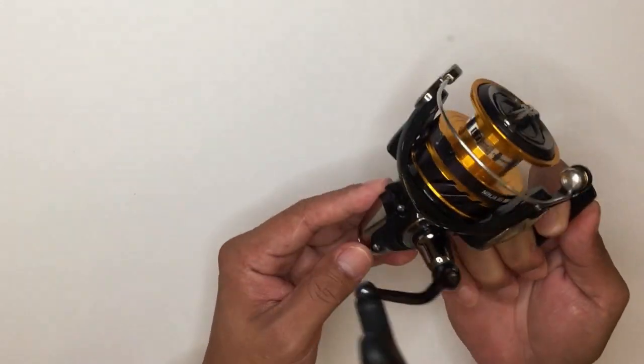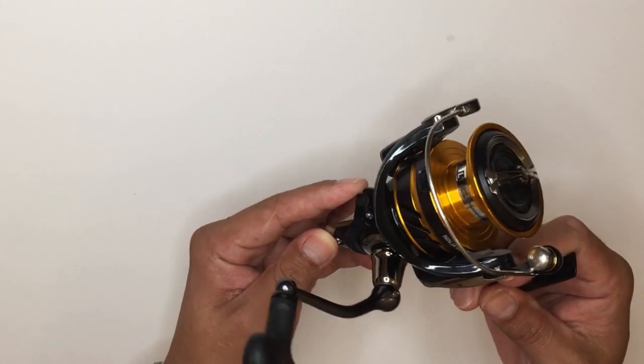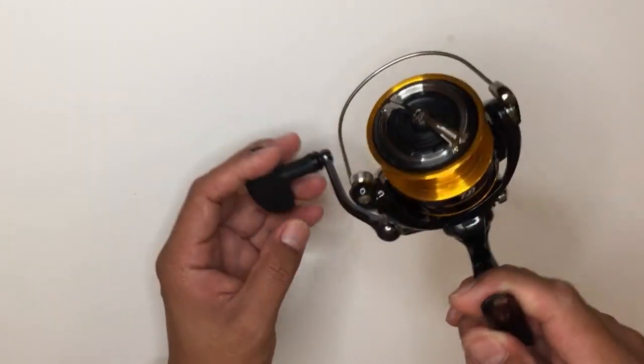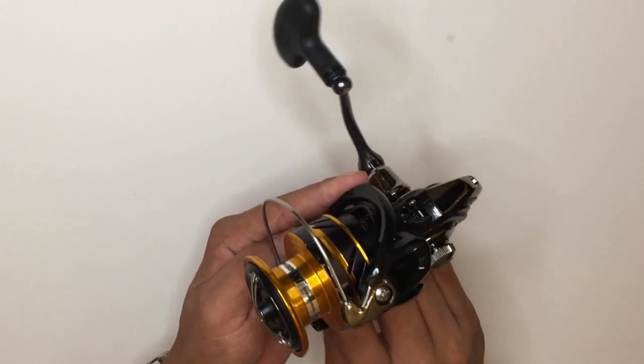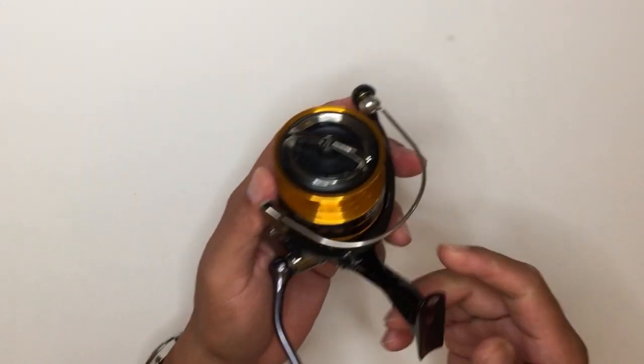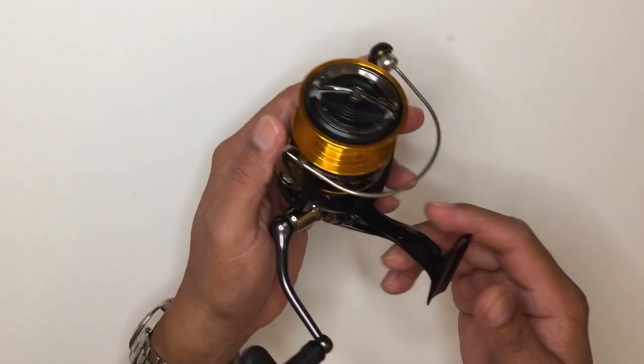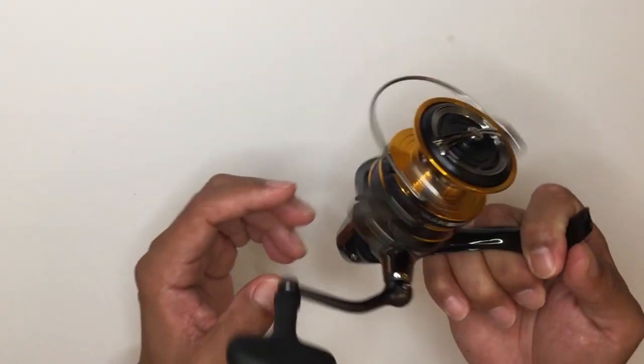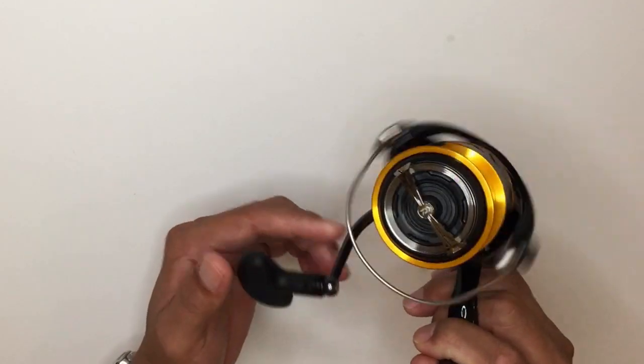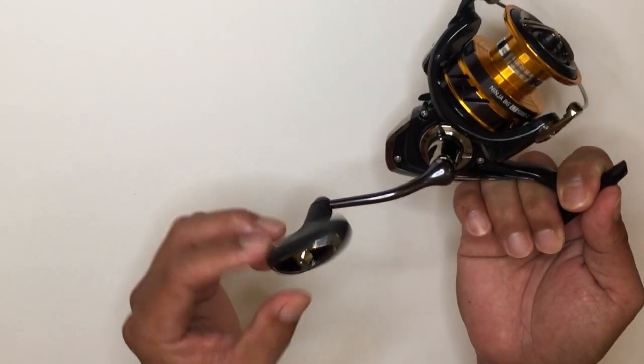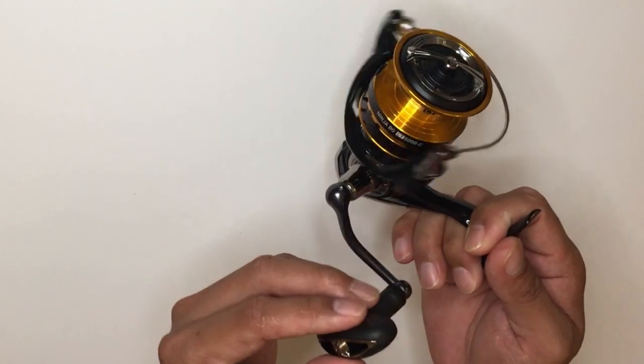The Daiwa Ninja BG-LT is definitely a value-for-money reel. Due to the integration of the LT concept, the Daiwa engineers succeeded in reducing the wheel's weight significantly. We could realize a reduction of weight of over 10% from the previous model.